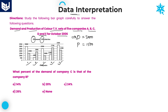Now we need to solve the questions according to the given information. For some companies demand is greater than production, whereas for some companies production is greater than demand. Company A: demand greater. Company B: production greater. Company C: demand greater. Company D: production greater. Company E: demand greater. The white bar is demand and the shaded one is production — you need to be very cautious about this.